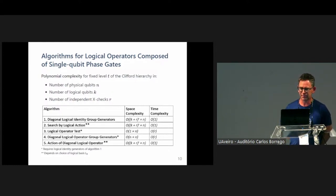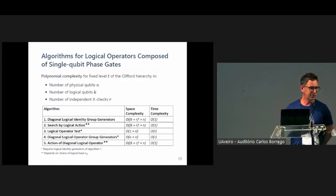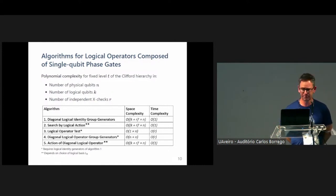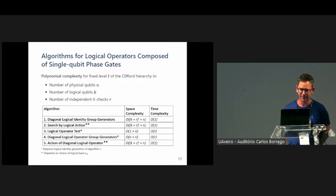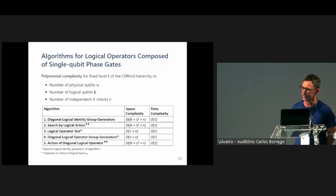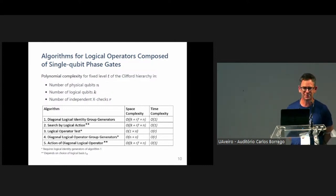The next algorithm is search by logical action: I take a desired logical operator such as a logical Control-Z, apply the algorithm to my code, and it tells me either there is a logical Control-Z implementable with single-qubit gates, or there isn't — and if there is, it gives me the implementation. The logical operator test is a quick way to check whether a gate made out of single-qubit gates is a logical operator on the code or not. We use that algorithm to find all diagonal logical operators on a code, outputting a generating set of such operators. Finally, the last algorithm tells you what the logical action of that operator actually is.